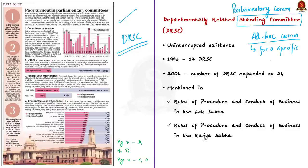The origin of DRSCs can be traced back to 1993 when 17 DRSCs were formally constituted. After analyzing the system for a decade, it was restructured in 2004 and the number was increased from 17 to 24. Presently we have 24 DRSCs.